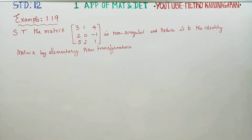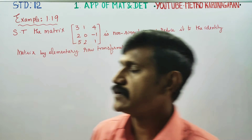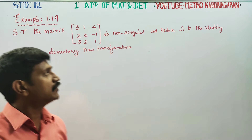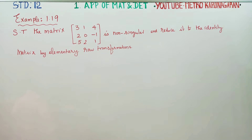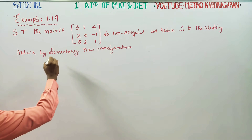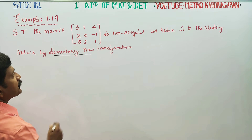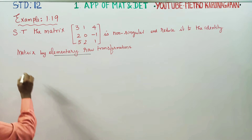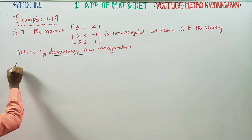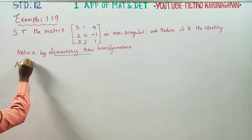Dear 12th standard students, in Example 1.19, show that the matrix is non-singular and reduce it to the identity matrix by elementary row transformations. Using elementary row transformations, we have to make this an identity matrix. First, I am going to name this matrix as A.